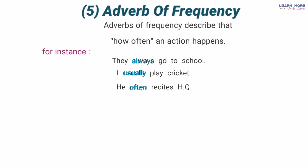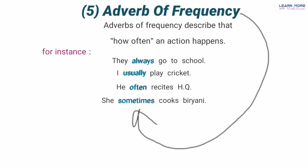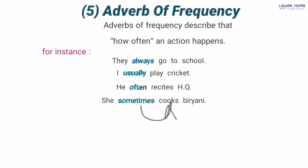'How often does she cook biryani?' — woh kab kab biryani pakati hai, kitni baar pakati hai? 'She sometimes cooks biryani' — woh kabhi kabhi pakati hai. Ab 'sometimes' bhi ek adverb of frequency hai jo uske action jo woh karti hai — pakane ka, cook — uski frequency ke baare mein bata raha hai ke woh kab kab karti hai: sometimes, kabhi kabhi.